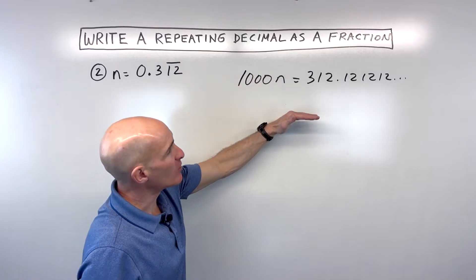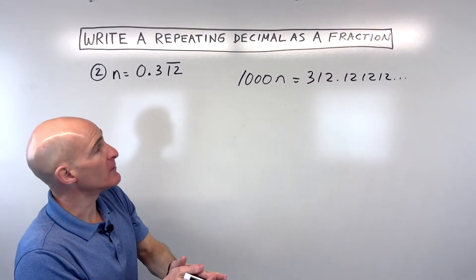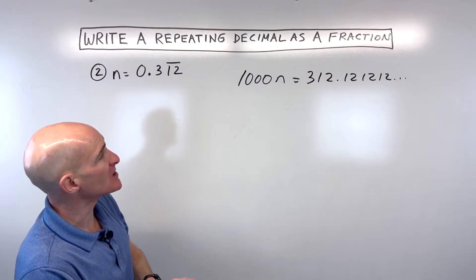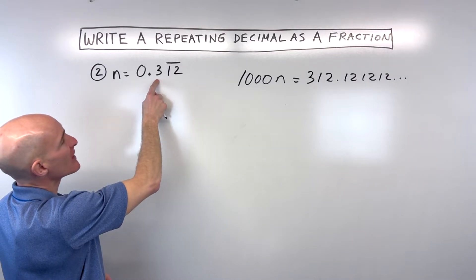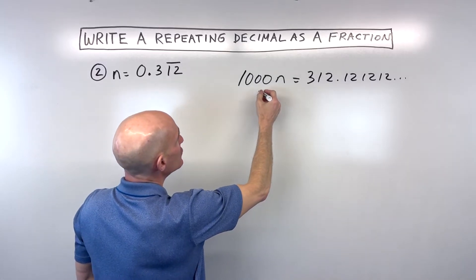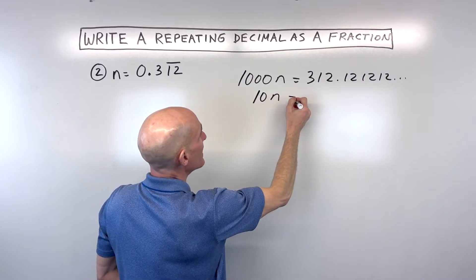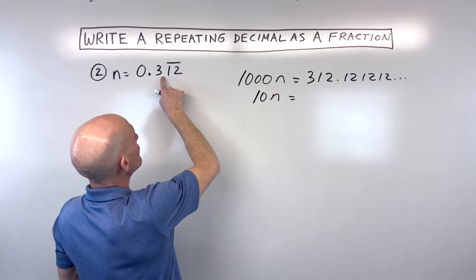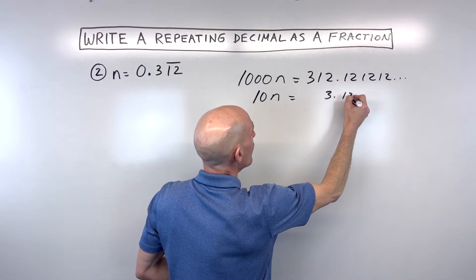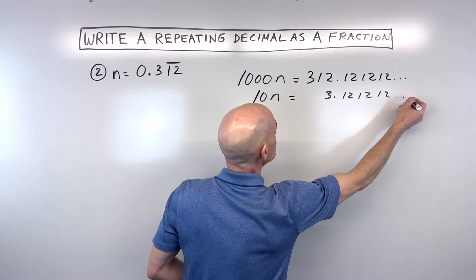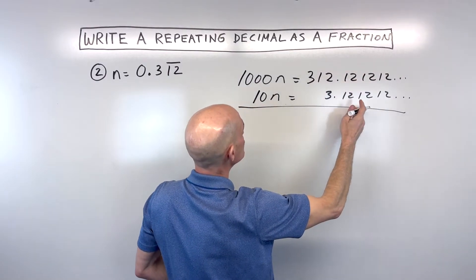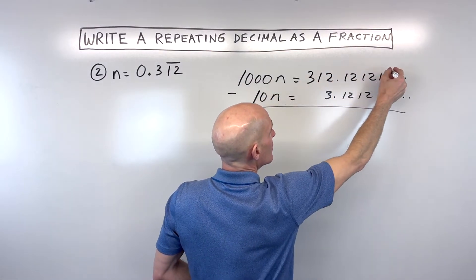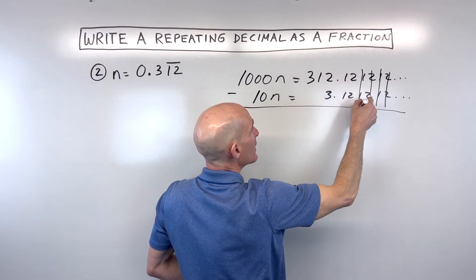Now, remember, when we subtract, we want to remove or eliminate that repeating portion of our decimal. So what I'm going to do here is I'm going to multiply both sides of this equation here now by 10. So if I do that, that gives us 10 times n is equal to 3.121212. And so now look what's happening. See how that repeating portion when we subtract is going to cancel out? Which is what we want.